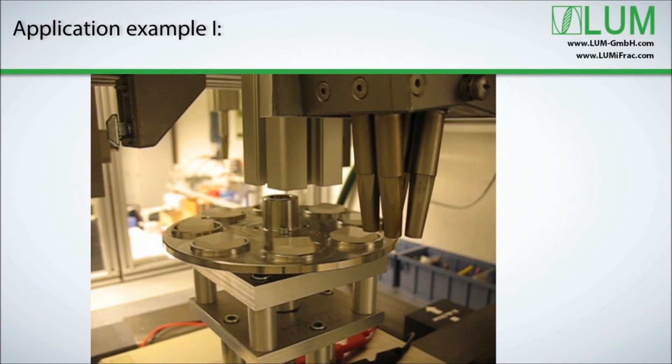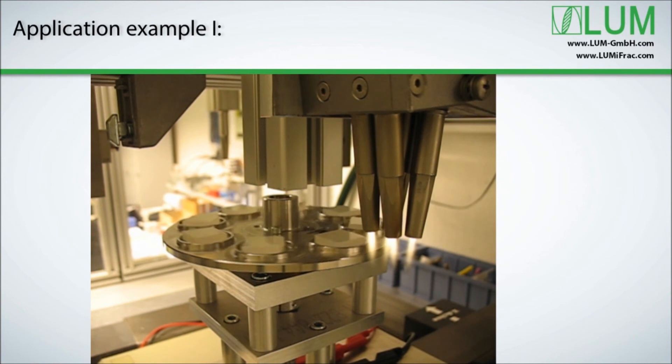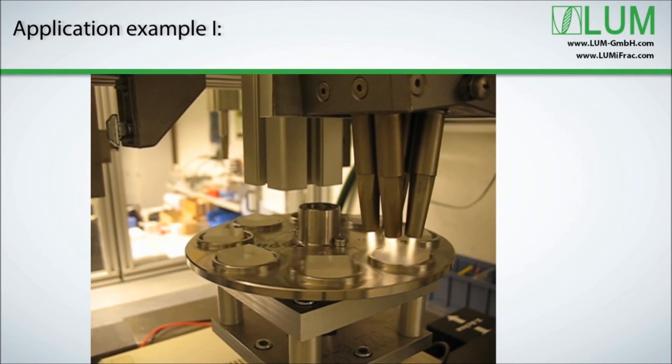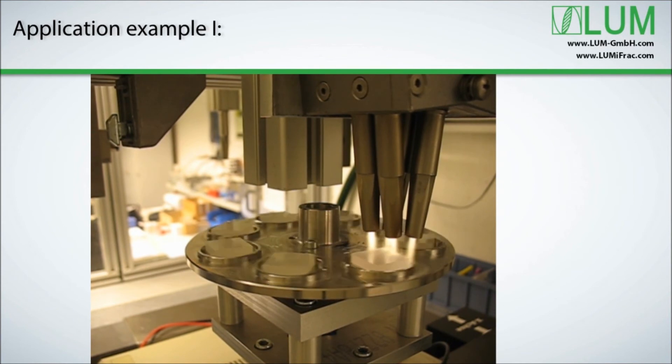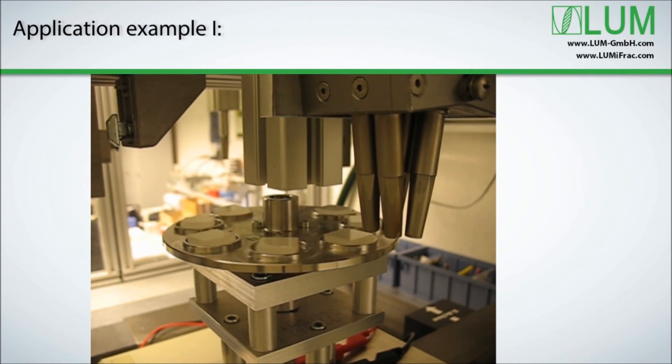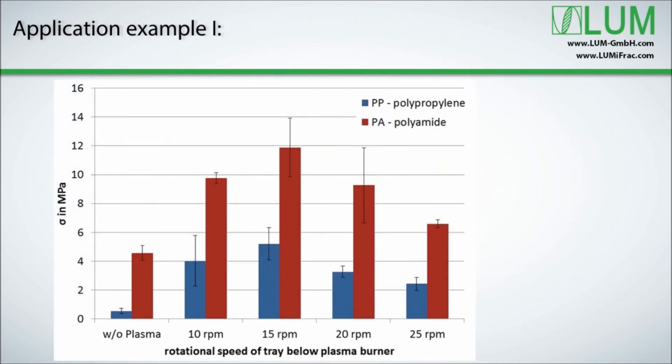The process of plasma treatment in this example was applied as follows. The samples are placed on a rotating tray. After plasma ignition, the tray is moved below the plasma burner where the eight samples were treated. After plasma treatment, the PA and PP substrates were bonded to stainless steel adapters using a two-component epoxy adhesive. The diagram shows the influence of different treatment conditions. The tray was rotated with four different speeds, which can be seen on the X-axis.